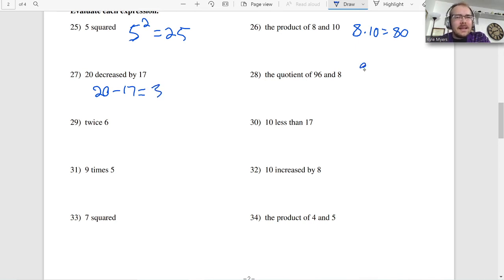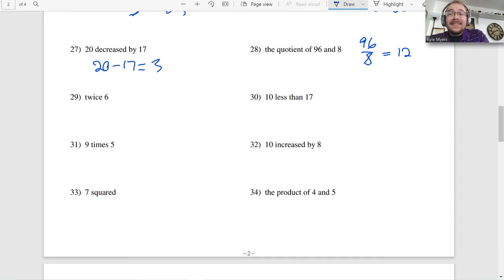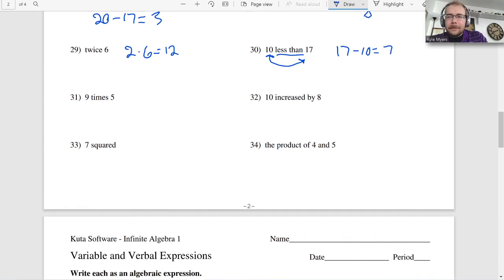Quotient of 96 and 8. I think I forgot that one. Was that 12? 2 times 8. Yeah, I think that's 12. 12 times 8. 2 times 8 is 16. Yeah. I almost... I was like, hold on. I don't know my 12s as well as I thought I did. Quotient of 96 and 8 is 12. Twice 6. Twice meaning 2 times. That's 12. 10 less than 17. Less than, I flip the order. So it would actually be 17 minus 10, which is 7. Then we have 9 times 5. That's 45.